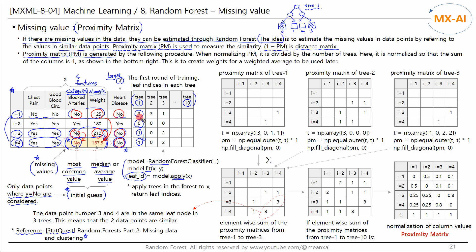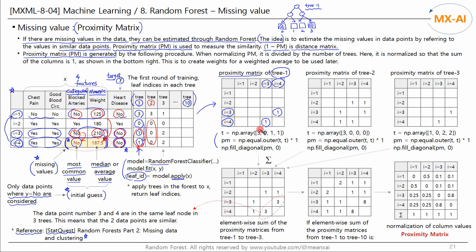This table shows that in tree 1, data points 3 and 4 belong to the same leaf node. And in tree 2, data points 2, 3, and 4 belong to the same leaf node. Data points belonging to the same leaf node are similar to each other. Now we use this table to create a proximity matrix. For tree 1, the pair of data points 3 and 4 belong to the same leaf node. You can easily create this table by using numpy's equal outer function for the column vector in tree 1, and all diagonal elements are set to 0.